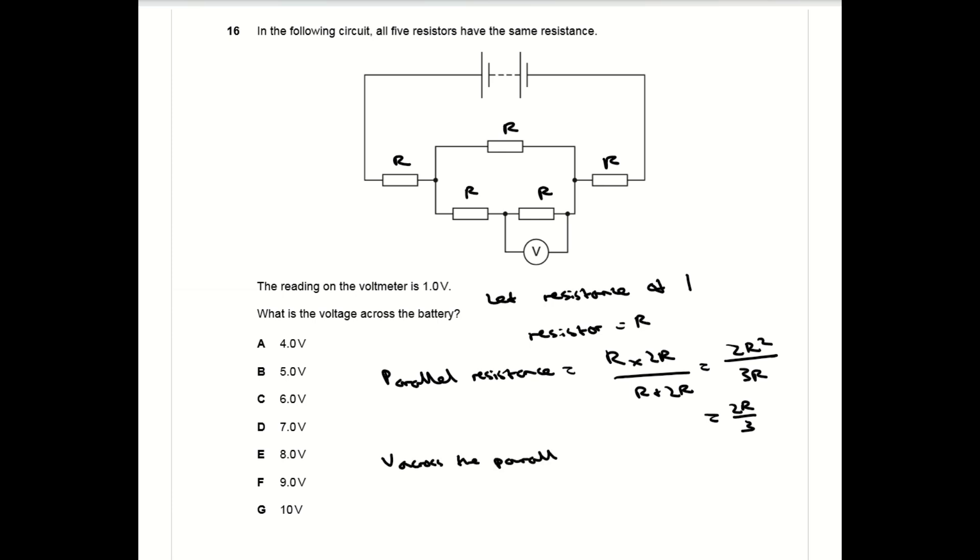So the resistance across the parallel bit is two volts in total. Those two volts are across a resistance of two r over three. Now using the potential divider equation, you know that two r over three over the total resistance, which is two r over three plus two r either side of the parallel bit, times the voltage across the battery gives you the value of two volts. You can then rearrange that equation to work out the voltage across the battery as eight volts, which is E.